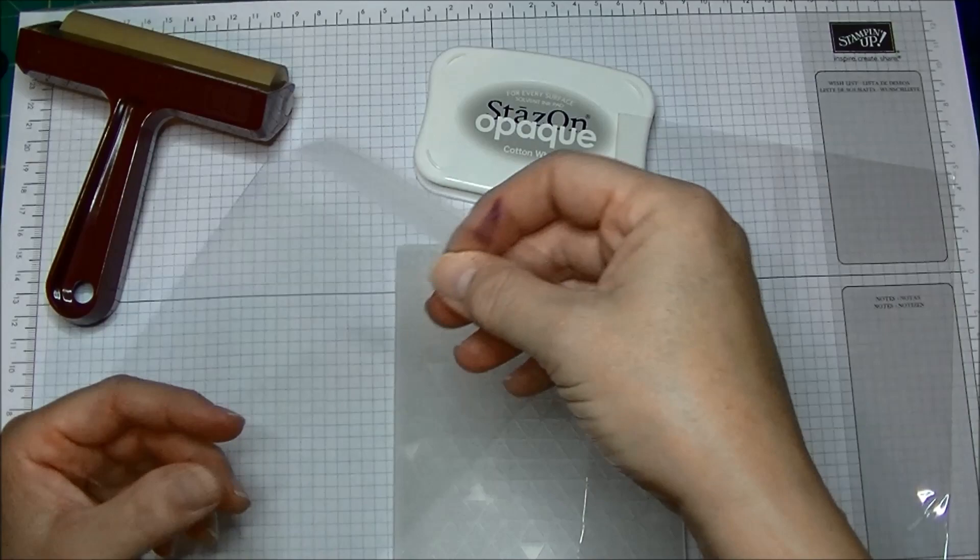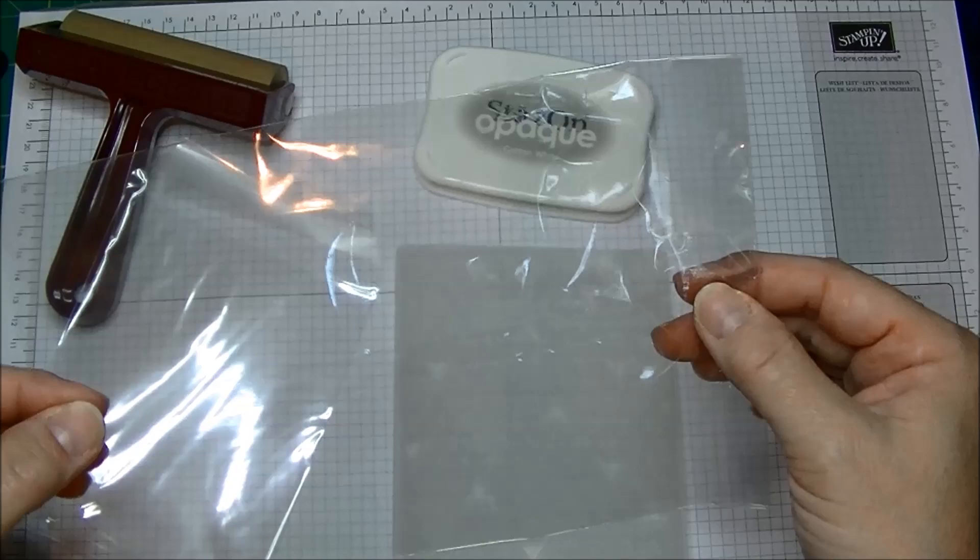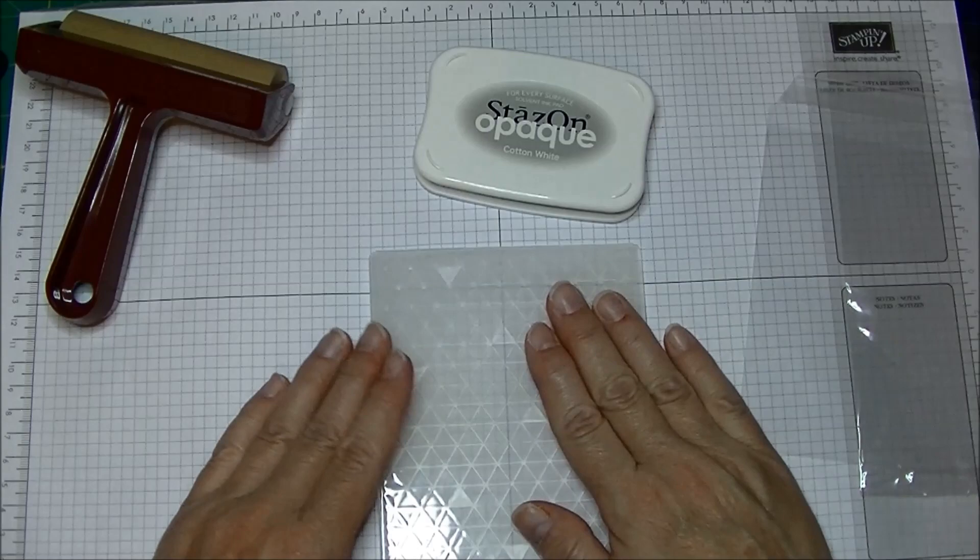I just want to show you how to do it but when you use the cellophane bags, this is a medium sized one, you want to be careful because one side of the bag has a seam in it. You want to put the side without the seam down toward your embossing folder because here's how you're going to do it.